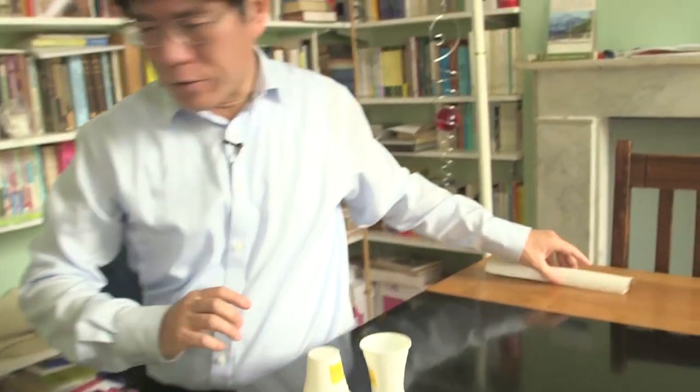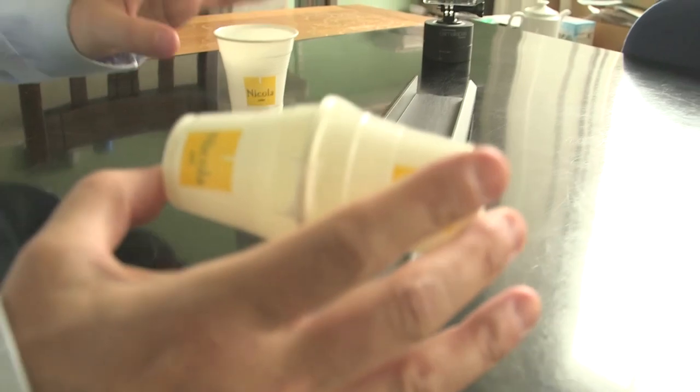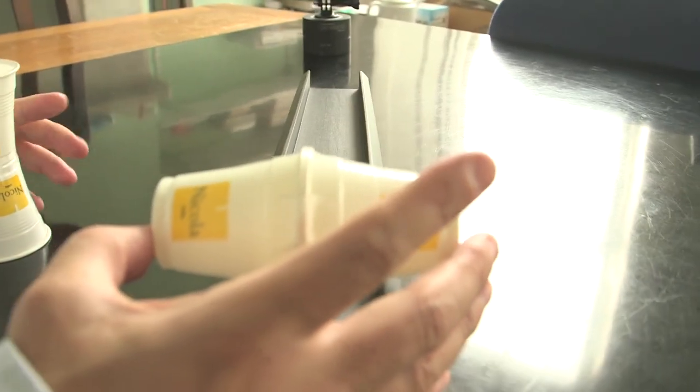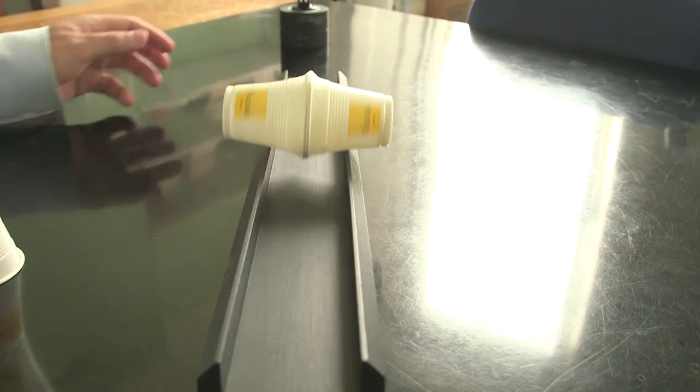Well, let's do the dynamic version of the experiment. So this is an inclined plane, and we'll try to let this roll down the slope. Here we go. And it rolls down, and rolls all the way down, very happily.